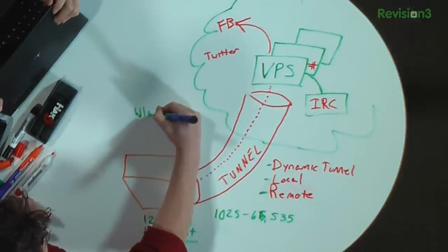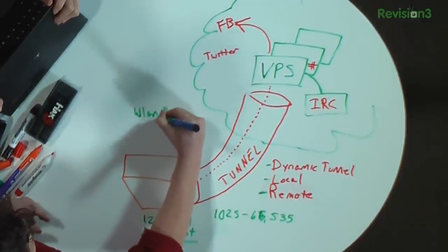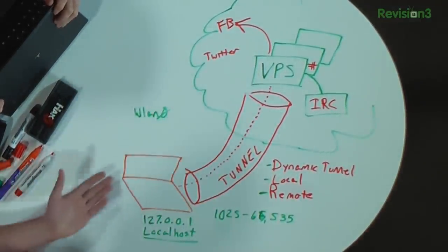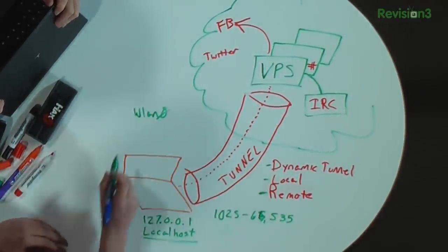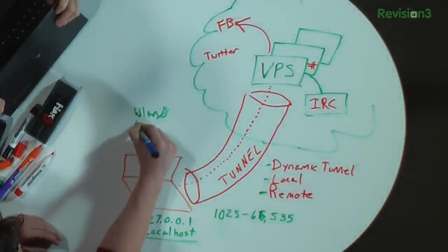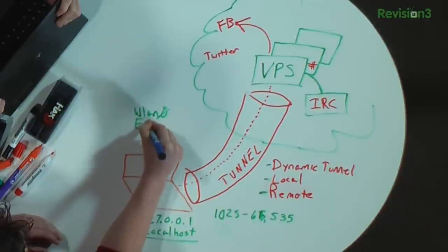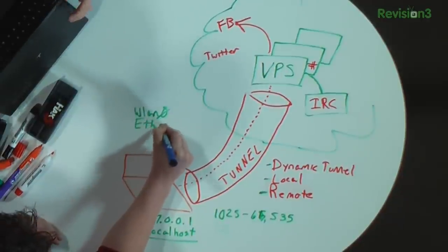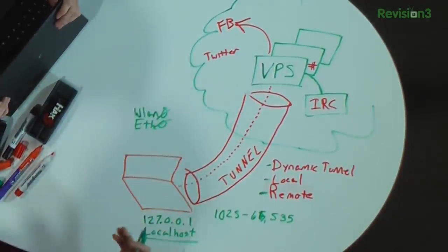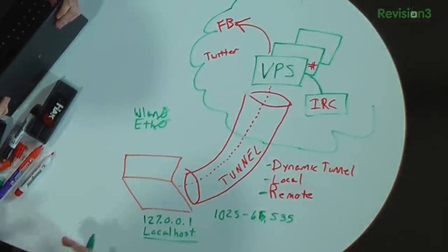You have WLAN0 - it's going to be called something different in Windows, but on the Linux side this is your wireless LAN. You'll have your ETH0, that's your wired Ethernet port.